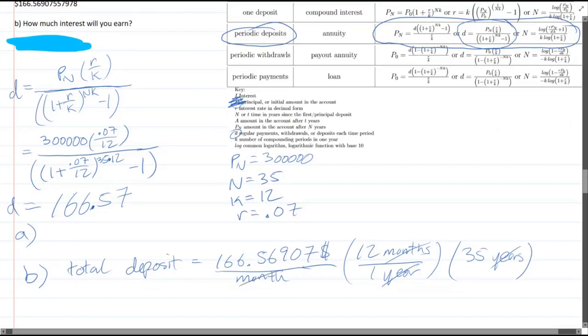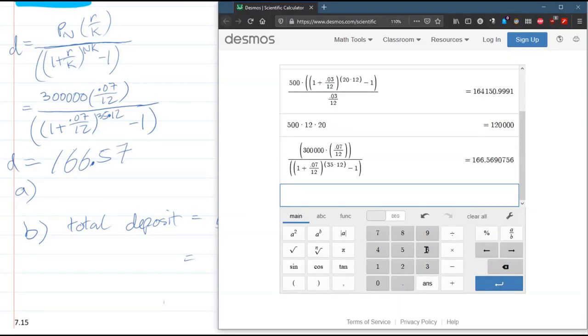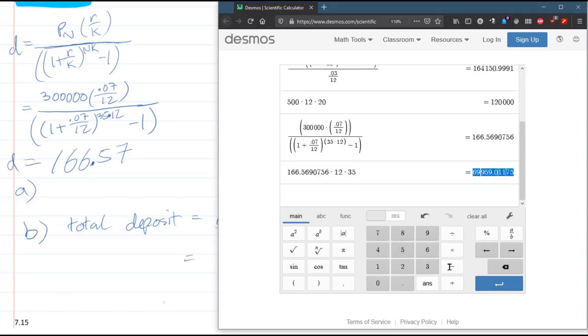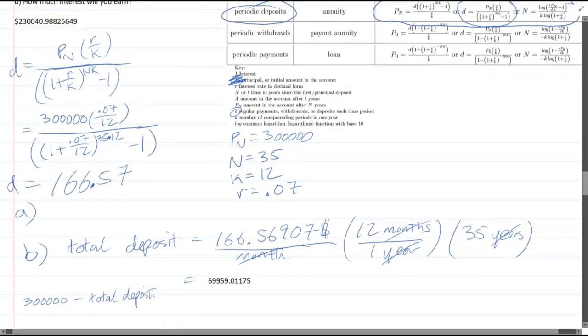Our years cancel, our months cancel. And this product right here will be how much we've deposited total. So I already have that number right there. Let's hit enter. Times 12 times 35 equals. This is our total deposit. And what we want to do is get the difference. We want to get the 300,000 minus that total deposit. That's how much interest we earn. And that will be the number right there. It's the difference between what we put in and the total value. That is all the interest that we would earn.